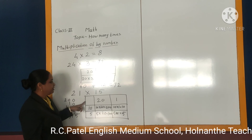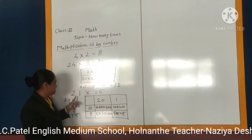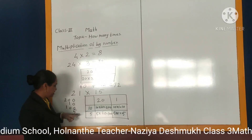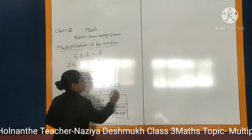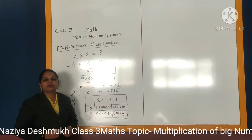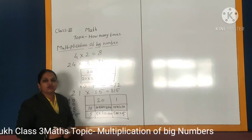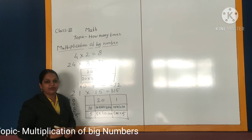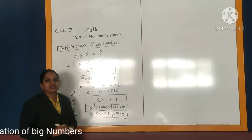By this way we can do the multiplication of big numbers. Here we have done the multiplication of 21 multiplied by 15. So students, it is very simple to do the multiplication of big numbers. I hope you have understood how to do the multiplication of big numbers. The remaining part will continue in the next video.